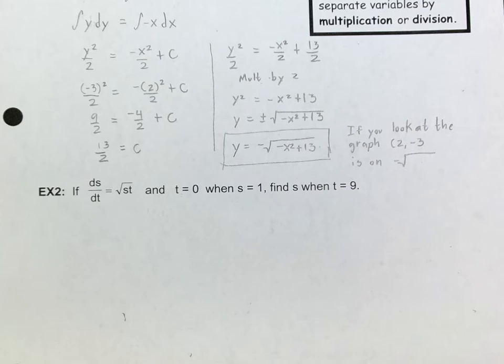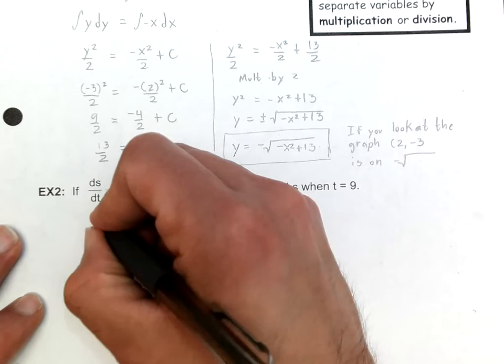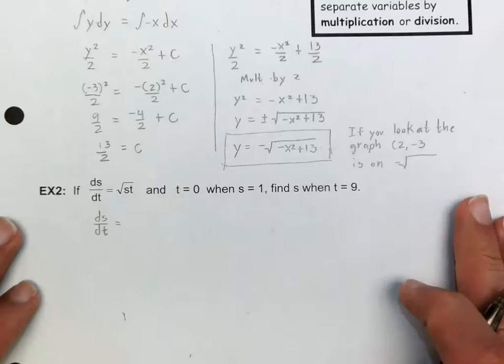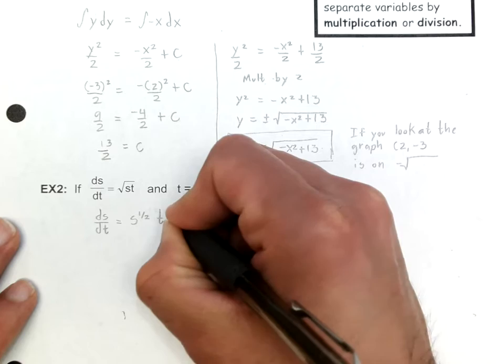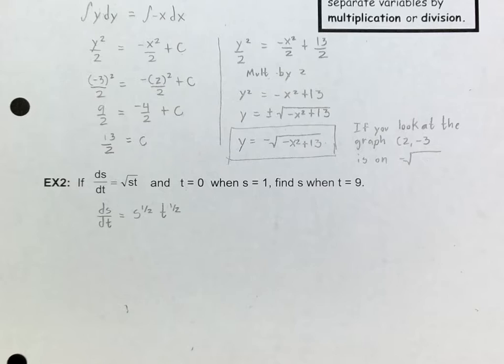Let's go to problem number two. All of these follow the same basic principle — it's just a matter of how good you are at algebra. The first thing I'm going to do here is change the square root of s·t to s to the one-half times t to the one-half. Then I'm going to get all the s terms on the left and all the t terms on the right, just like in example one.